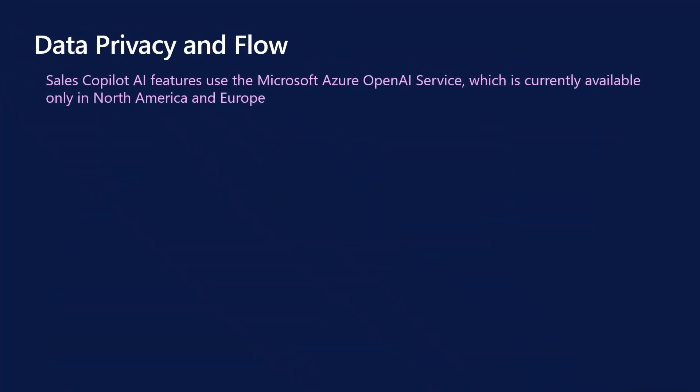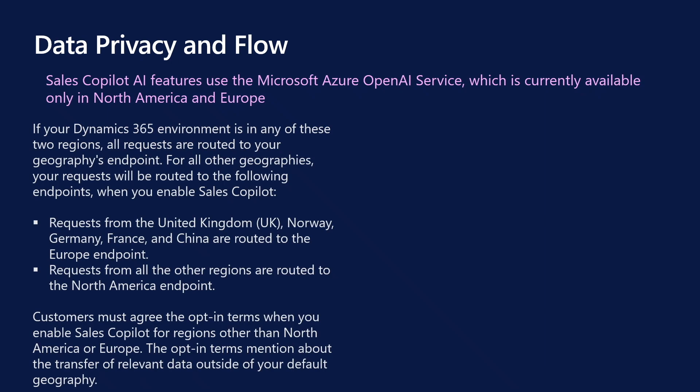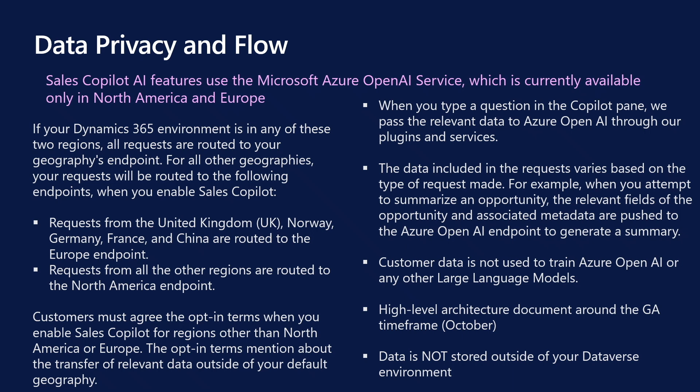Data and frequently asked questions. Data privacy and flow. Sales Copilot AI relies on Microsoft Azure OpenAI Service, which is currently available in North America and Europe. Requests from these regions go to the specific endpoints. Other regions such as the UK, Norway, Germany, France and China use the European endpoint, while all other regions use the North American endpoint. Users outside North America and Europe must accept the opt-in terms related to data transfer beyond their default region when enabling Sales Copilot. When you ask a question in the Copilot pane, we send the necessary data to Azure OpenAI through our plugins and services. The data sent depends on the specific request. For instance, if you want to summarise an opportunity, the pertinent opportunity fields and metadata are sent to Azure OpenAI to create the summary. Importantly, customer data is not used for training Azure OpenAI or other large language models. In the upcoming general availability release in October, there will be high level architecture documentation available. It's also crucial to note the data is not stored outside your Dataverse environment.